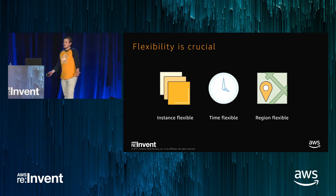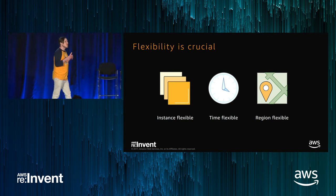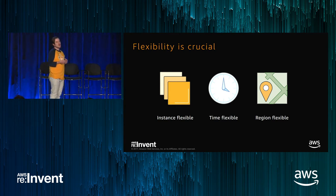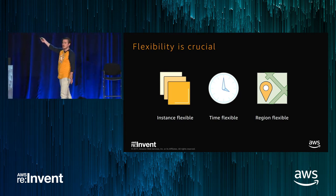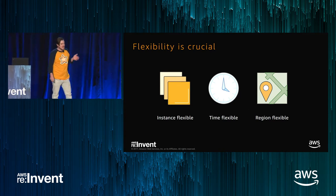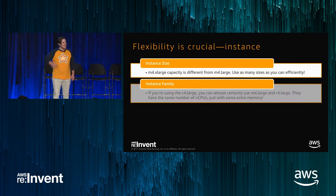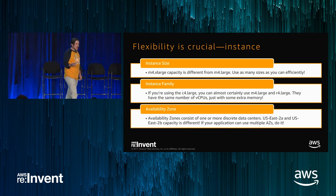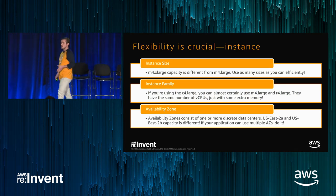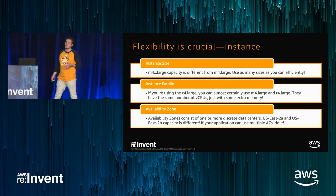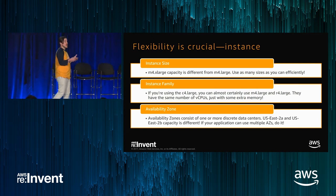When using Spot, flexibility is king. Most people would think they need to be patient — if there's no capacity, just wait or launch on-demand. That is one approach and a completely legitimate one. But it's not the only approach. You can choose to be instance flexible, time flexible, or region flexible. For instance flexibility, each of these options enables you — whether it's instance size, instance family, or availability zone. You don't need to be all three, but I highly recommend attempting to be two of them.